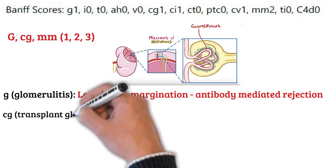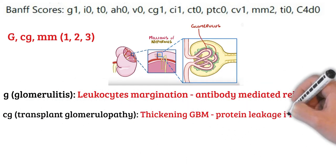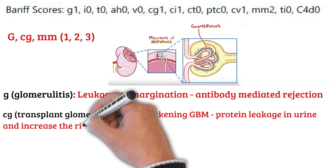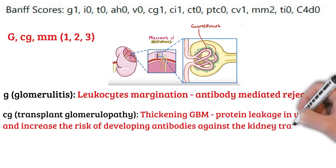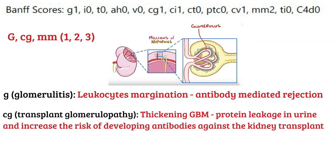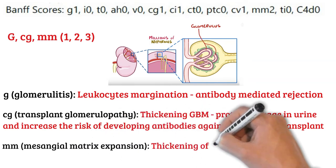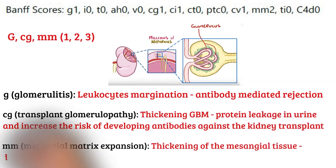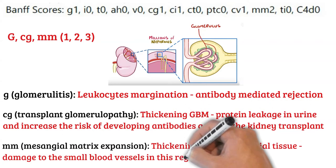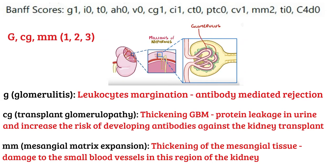Cg stands for transplant glomerulopathy. This represents the thickening of the glomerular basement membrane, which can cause protein leakage in urine and increase the risk of developing antibodies against the kidney transplant. Mm stands for mesangial matrix expansion, which represents the thickening of the mesangial tissue of the glomerulus, indicative of damage to the small blood vessels in this region of the kidney.